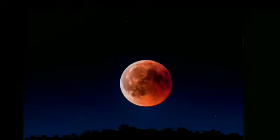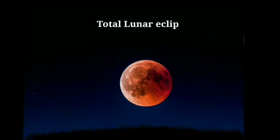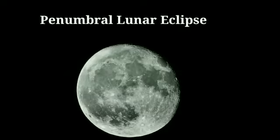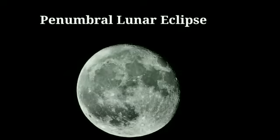When the earth comes in between the sun and moon, the earth casts two types of shadows: penumbra and umbra. Now let's see the types of lunar eclipses. A total lunar eclipse, or blood moon, takes place when the earth comes between the sun and the full moon and blocks the sun's direct rays from lighting the moon. The penumbral lunar eclipse is so light that you can't even notice its presence.